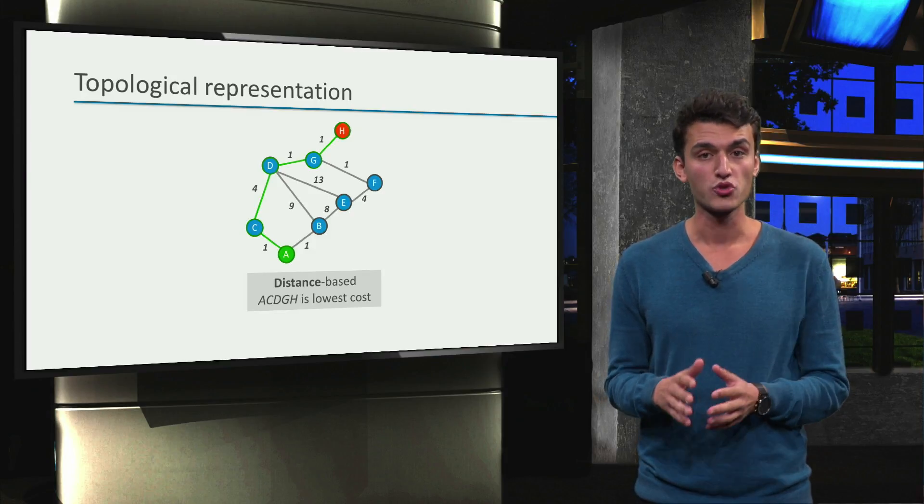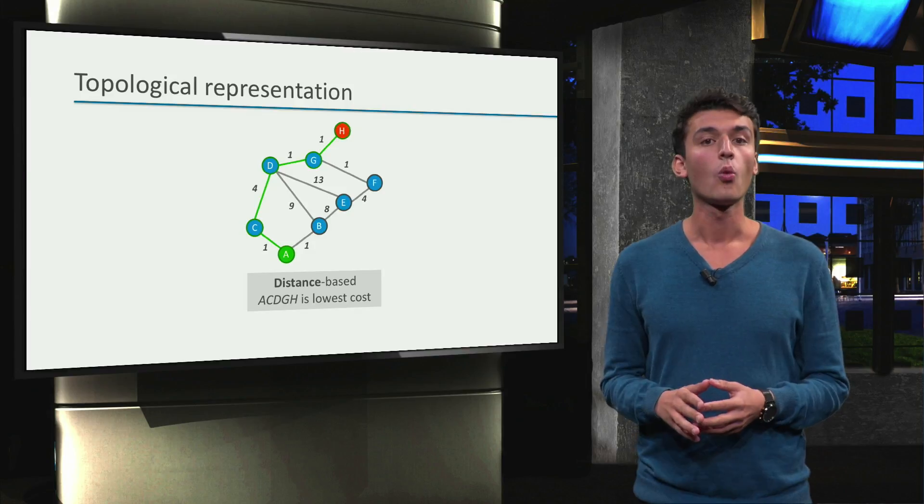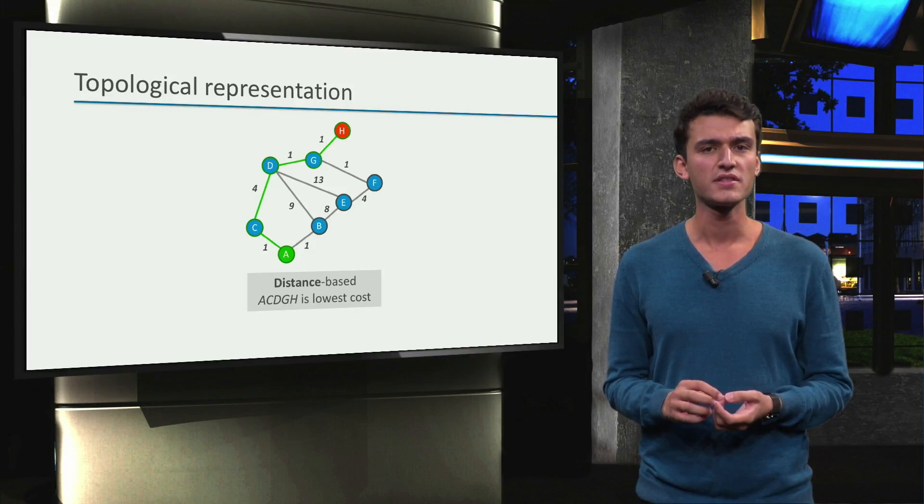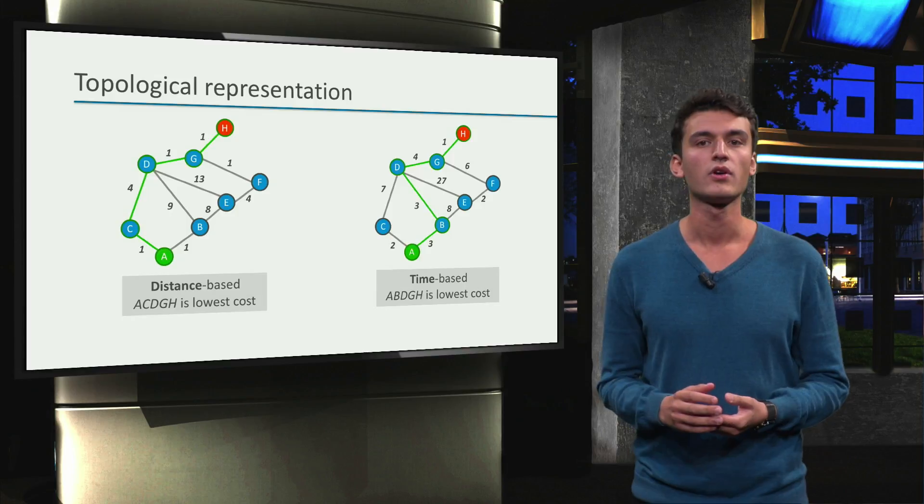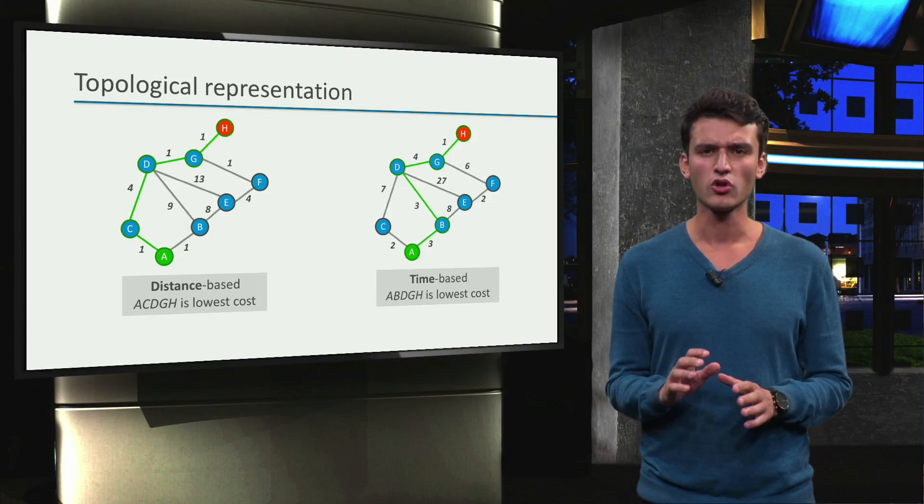So we are optimizing with respect to the distance. What will happen if I don't want the shortest distance but the shortest time? In that case we will have a different cost for each road. So a different cost function. Remember that a shorter road is not always faster.